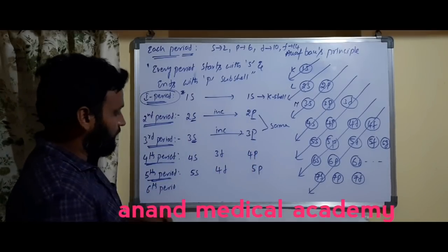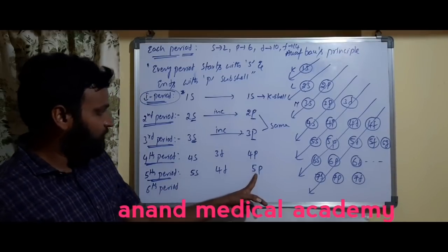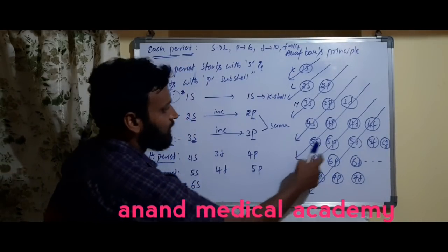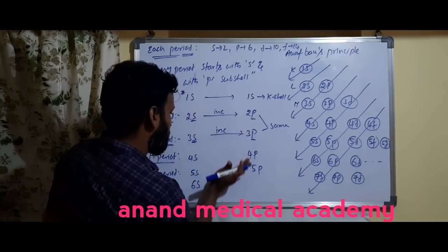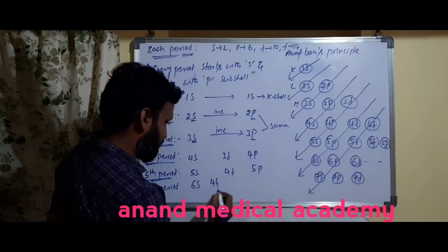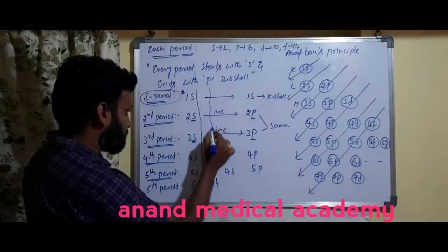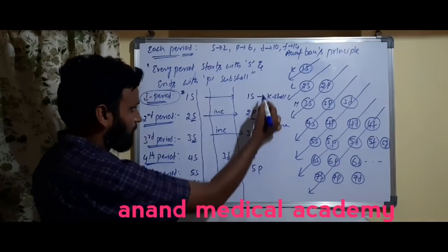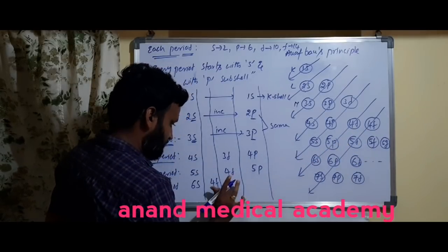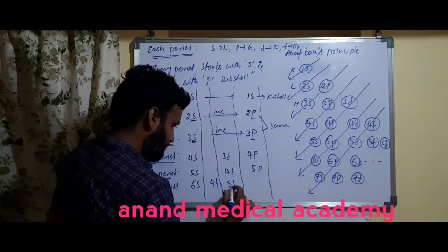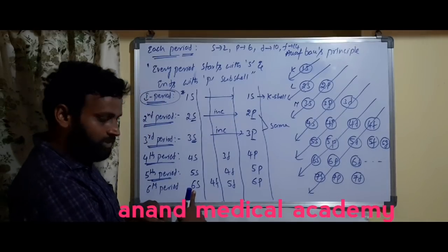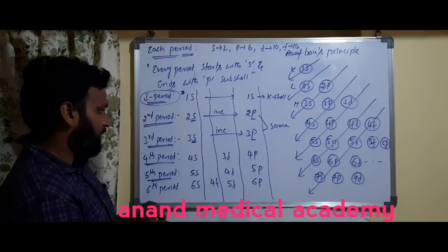After 5p comes 6s, beginning the sixth period. After 6s, the order is 4f, then 5d, then 6p. So the sixth period is: 6s → 4f → 5d → 6p. The sixth period starts with 6s and ends with 6p. The seventh period similarly starts with 7s.